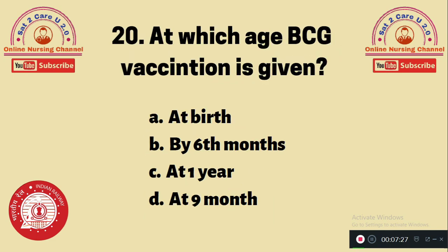Question 20: At which age is BCG vaccination given? A. At birth, B. By 6 months, C. At 1 year, D. At 9 months. BCG vaccination is given at the time of birth. The correct answer is A.